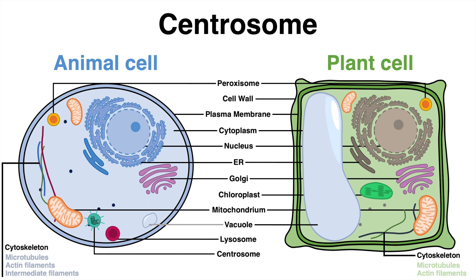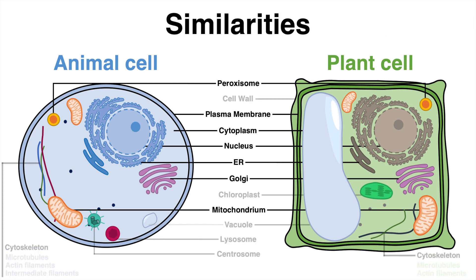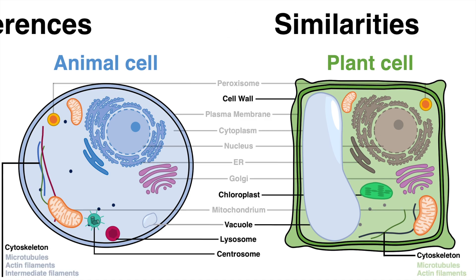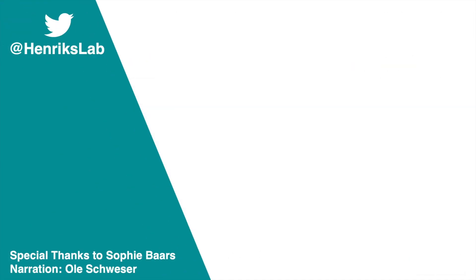As you can see, plant cells and animal cells share a lot of similarities, but these types of eukaryotic cells also have exclusive organelles. If you are curious how a prokaryotic cell is structured, you may check out this video here. Please like the video if it was helpful and don't forget to subscribe to the channel. Special thanks to Sophie — have a good one!